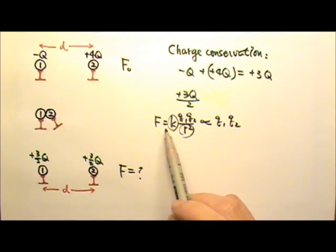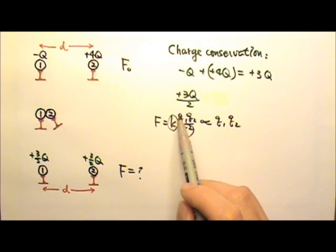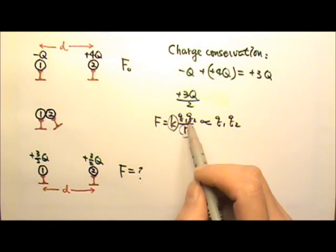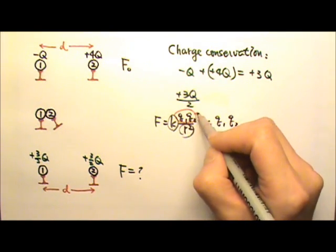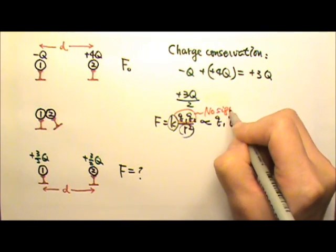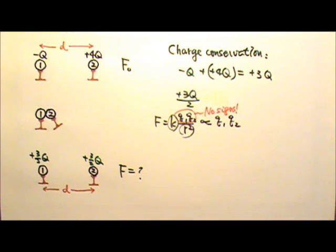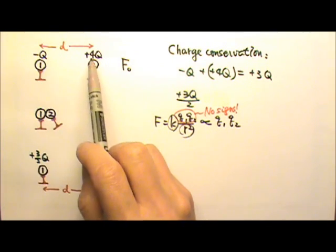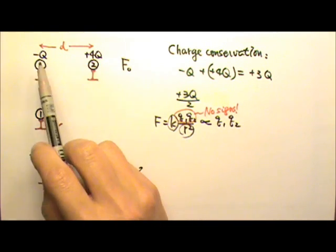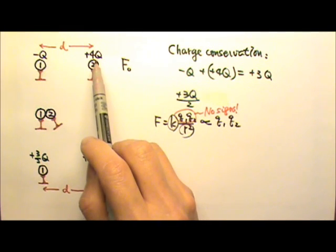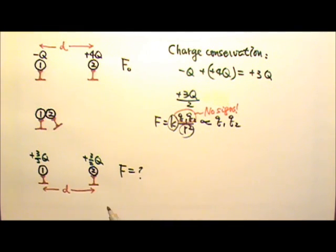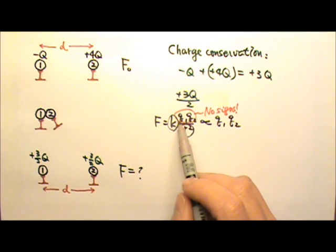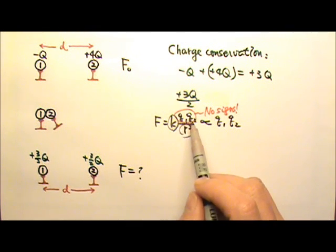When I use Coulomb's law to find the electric force between two point charges, I do not plug in the signs. I only use this equation to find the magnitude of the force. So I don't plug in negative q times positive 4q. I just plug in q times 4q, so I can get the magnitude of the force. Because if I plug in the signs, let's say one of these two charges is negative, I get a negative force.